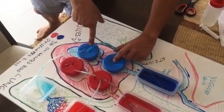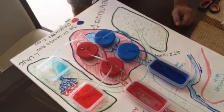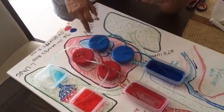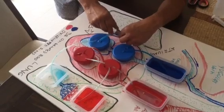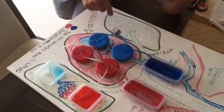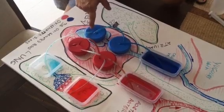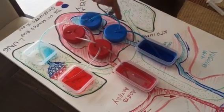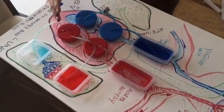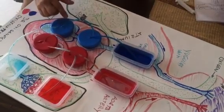We just saw it go to the ventricle. Then we are going to represent a valve which is called the tricuspid valve that won't allow the blood to go back when the heart contracts, which is called systole.